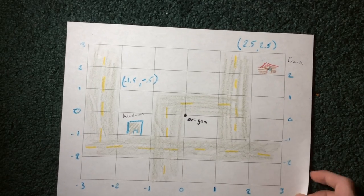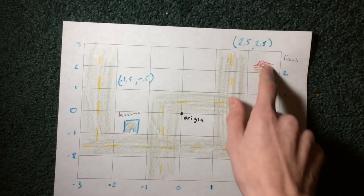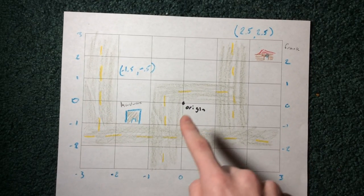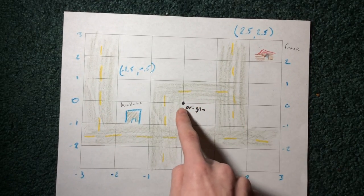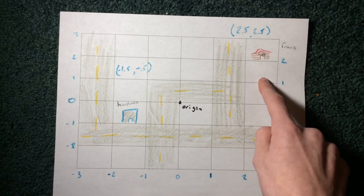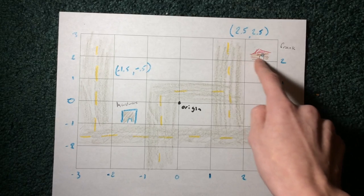So I have positives on this side and up from the origin, and negatives this way and down from the origin. So what we're going to do is first we're going to count to Frank's house. We're going to go over one, over two, and over two and a half, and then up one, up two, and then two and a half. So then we land on the building.